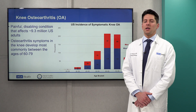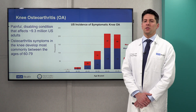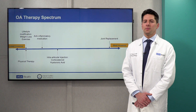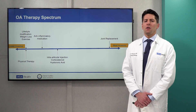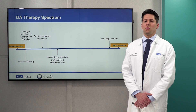Knee osteoarthritis is a painful disabling condition affecting approximately 9.3 million U.S. adults. Symptoms most commonly develop in individuals in their 60s and 70s. Treatment ranges on a spectrum from non-invasive lifestyle modifications to total joint replacements. Many of these less invasive treatment options have mixed effectiveness, and there's a large need for patients with refractory symptoms or patients unable or unwilling to undergo joint replacement.